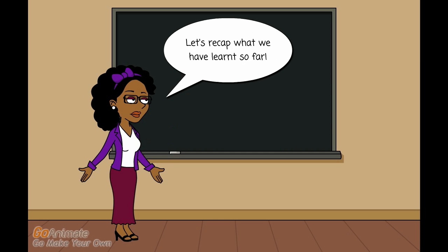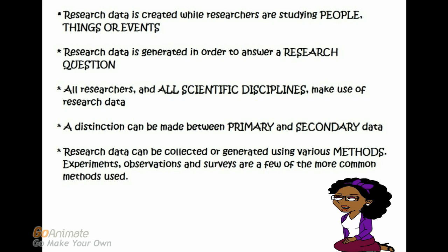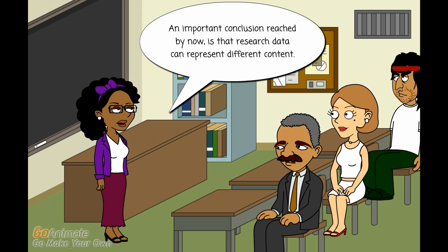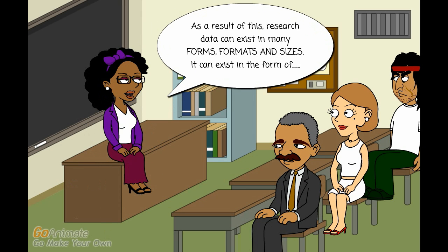Let's recap what we have learned so far. We now know that research data is created while researchers are studying people, things, or events. Research data is generated in order to answer a research question. All researchers, and all scientific disciplines, make use of research data. A distinction can be made between primary and secondary data. Research data can be collected or generated using various methods — experiments, observations, and surveys are a few of the more common methods used. An important conclusion is that research data can represent different content, and as a result can exist in many forms, formats and sizes.